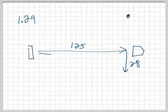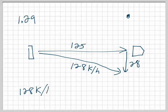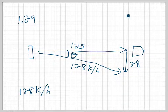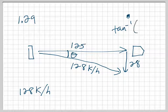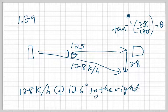What's the resultant velocity of this ball? I go from the tail of the first to the head of the last, and again I can use the Pythagorean theorem. 125 squared plus 28 squared, take the square root, and I get 128 kilometers per hour. Then I need to figure out the direction. I don't know how this baseball field is oriented in space, so I'll just find this angle. I do the inverse tangent of 28 over 125, which gives me about 12.6 degrees. So I'll say 128 kilometers per hour at 12.6 degrees to the right of home plate.